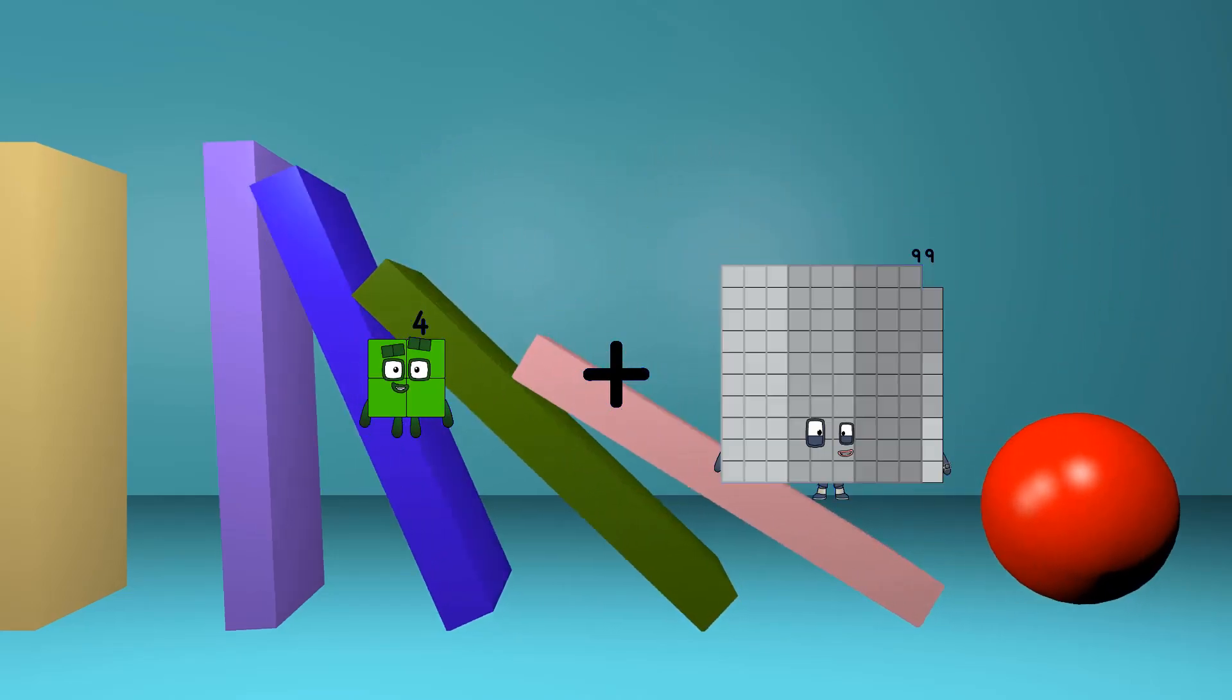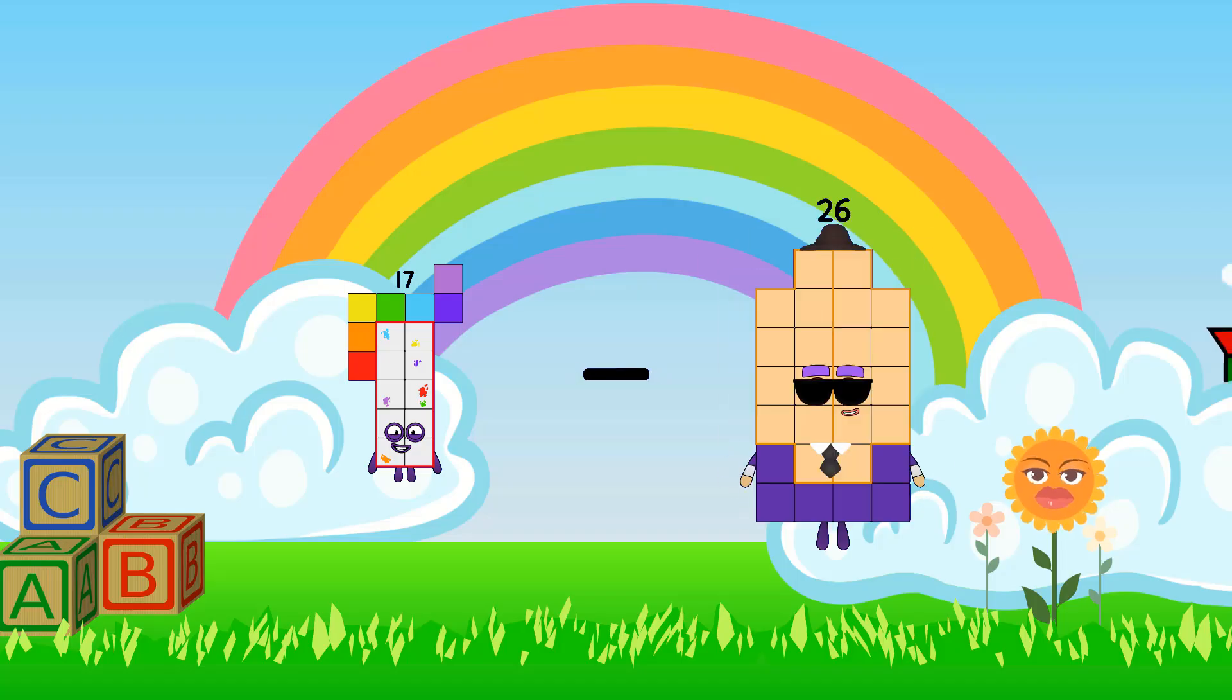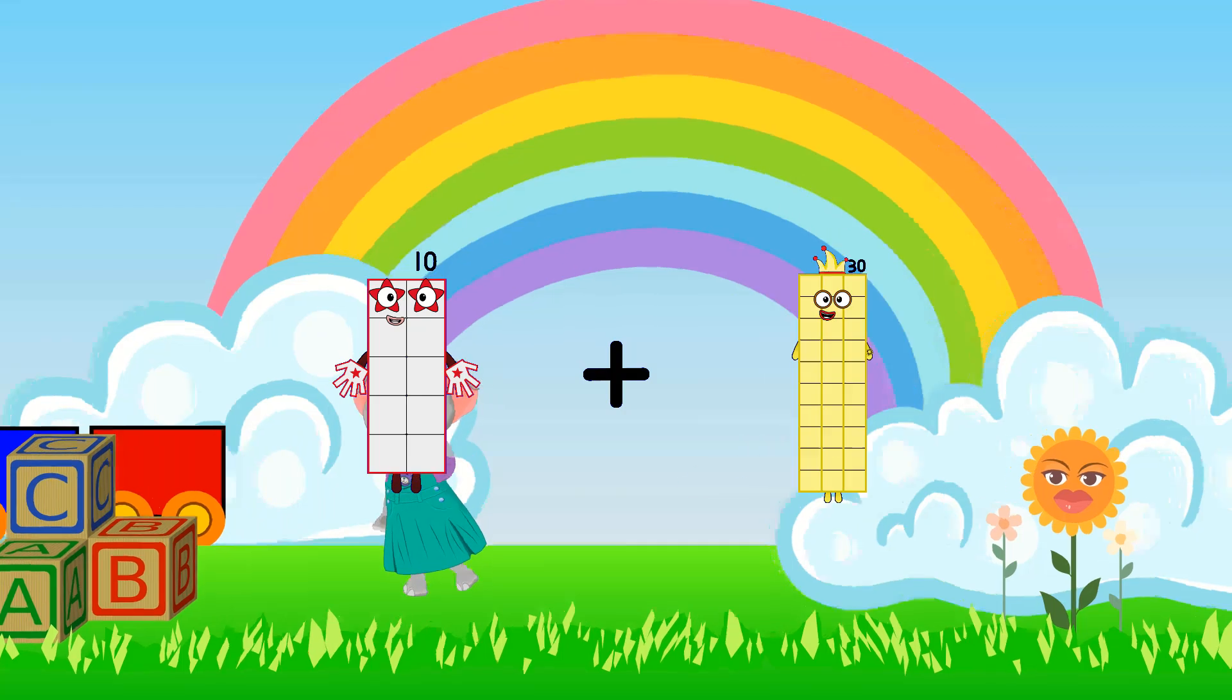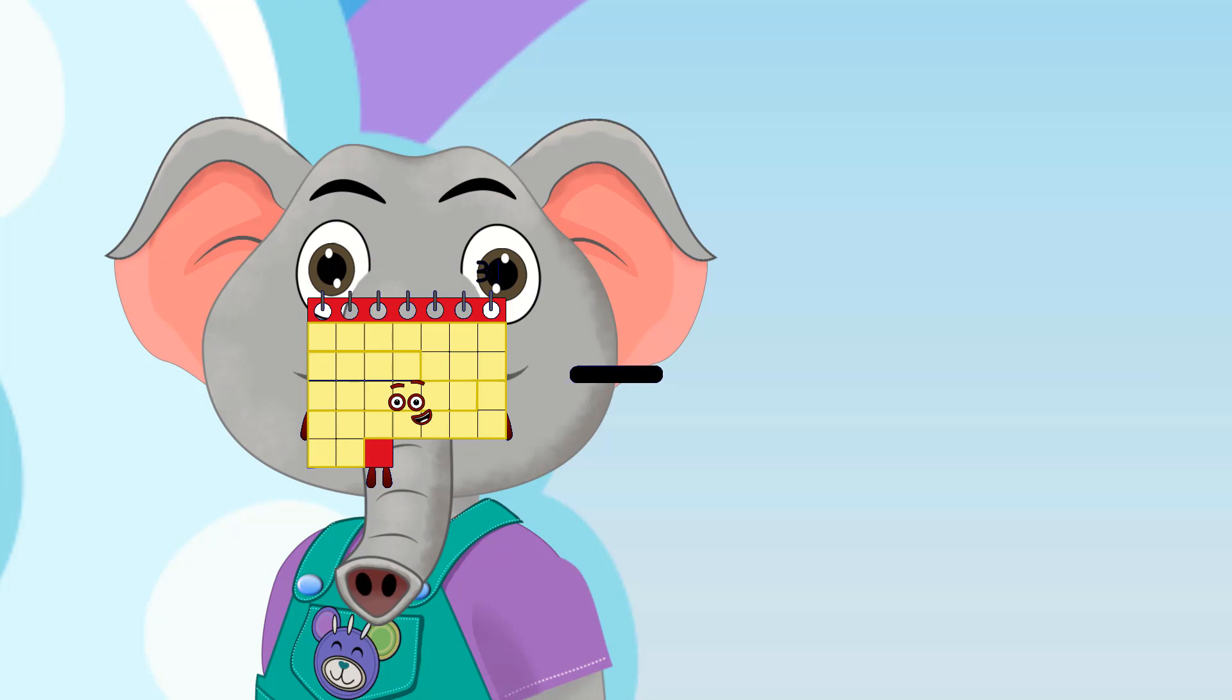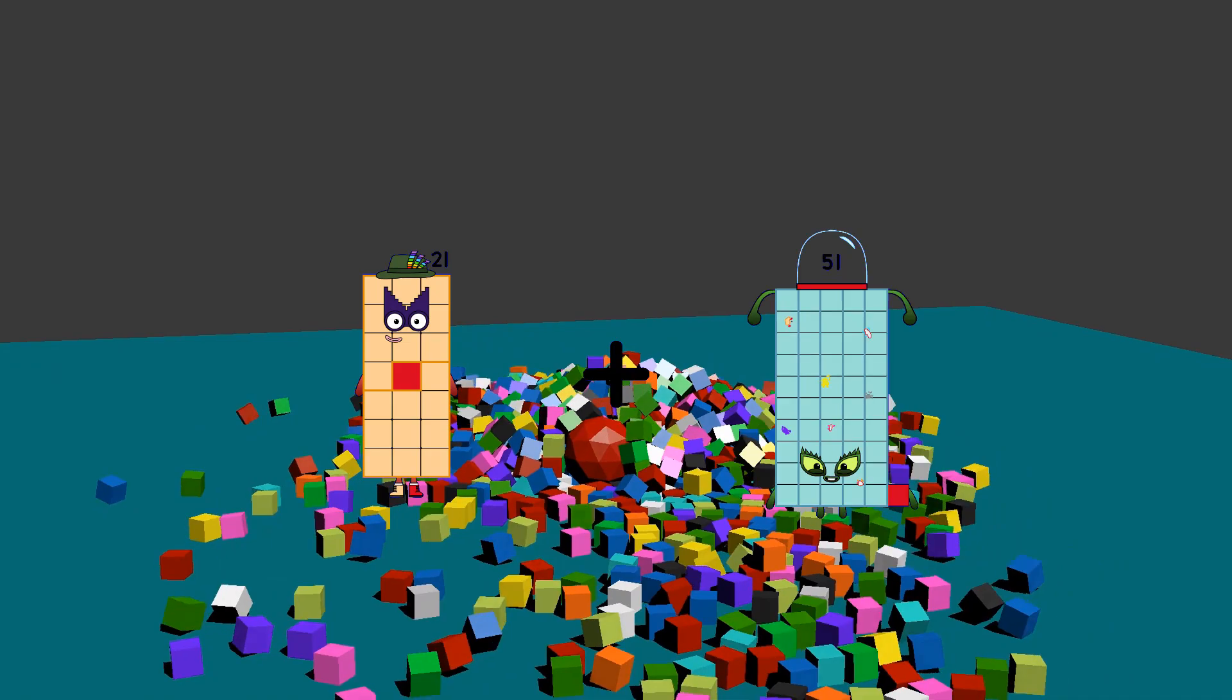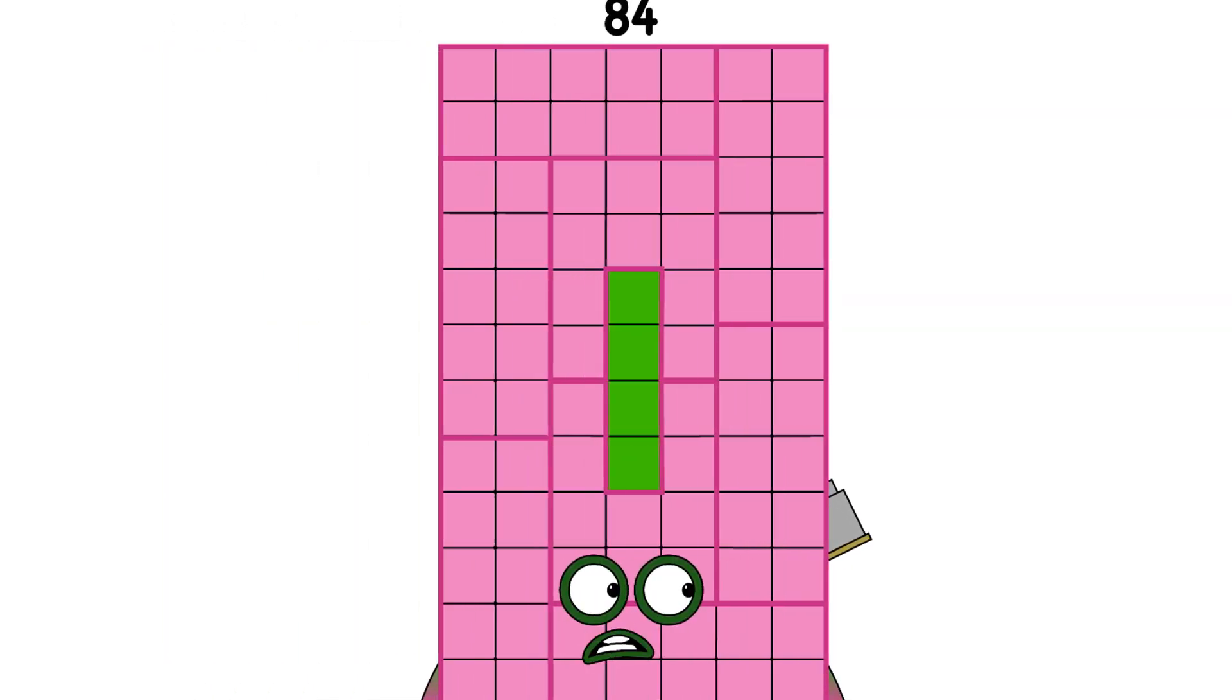4 plus 14 equals 18, 17 minus 2 equals 15, 10 plus 40 equals 50, 31 minus 9 equals 22, 21 plus 19 equals 40. Now what?